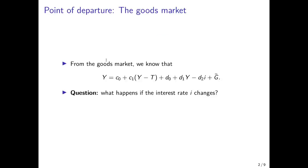The point of departure here is that we know from the goods market that income is equal to consumption of the households, plus investment of firms, plus governmental expenditures. Now the question is: what happens if the interest rate changes? In the previous chapter, we talked about what happens when government expenditures change, which leads to the multiplier effect and things like that, but now we ask what happens when the interest rate changes.